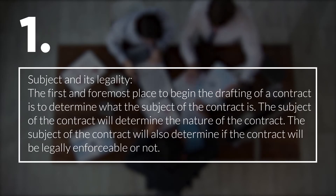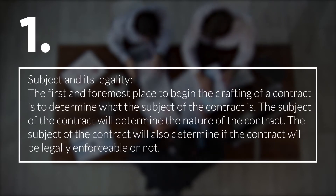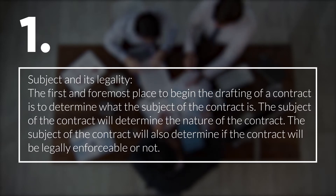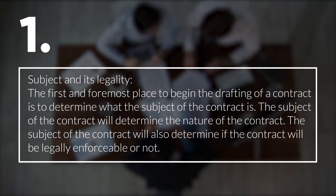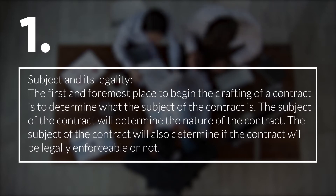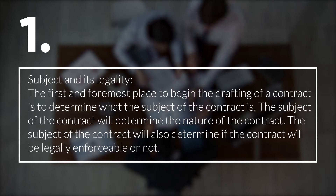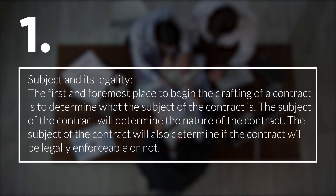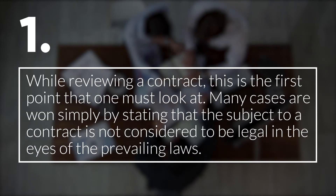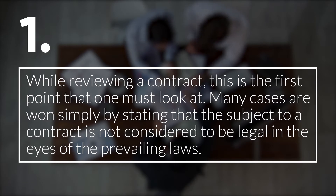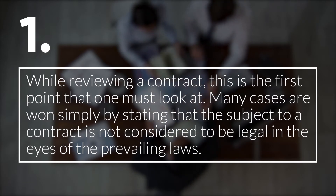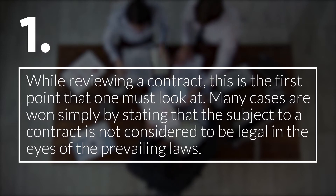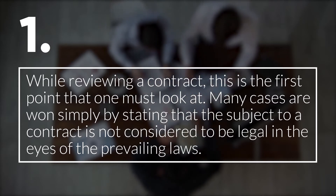1. Subject and its Legality. The first and foremost place to begin the drafting of a contract is to determine what the subject of the contract is. The subject of the contract will determine the nature of the contract and also determine if the contract will be legally enforceable or not. While reviewing a contract, this is the first point one must look at. Many cases are won simply by stating that the subject of a contract is not considered to be legal in the eyes of the prevailing laws.